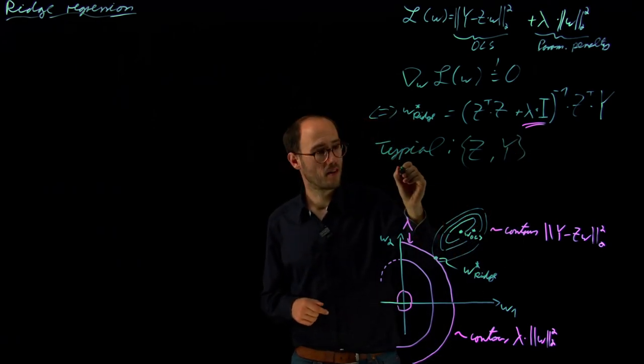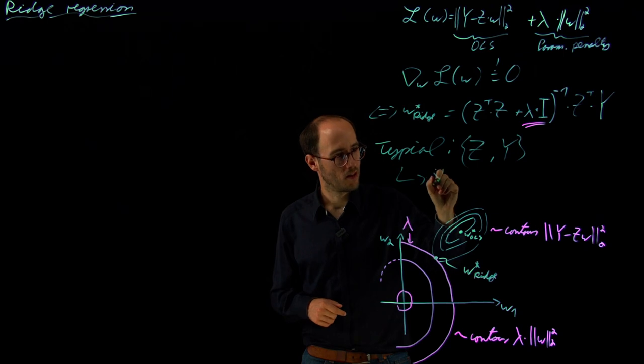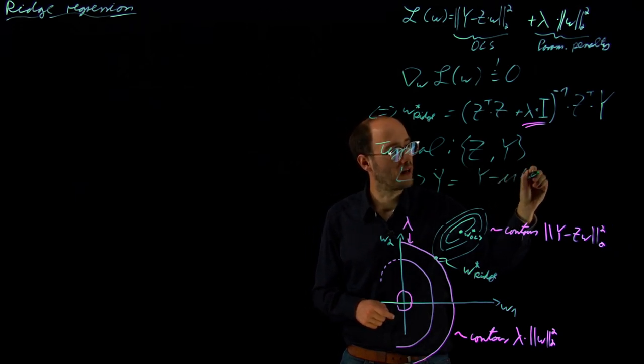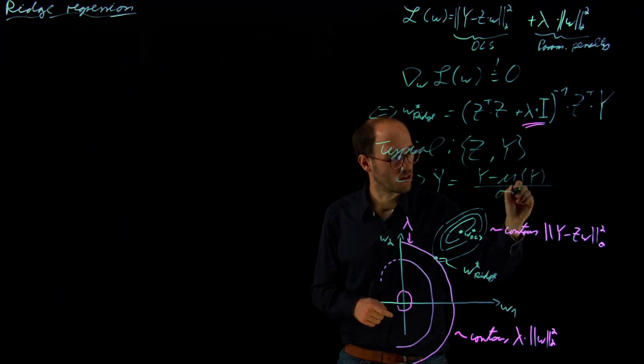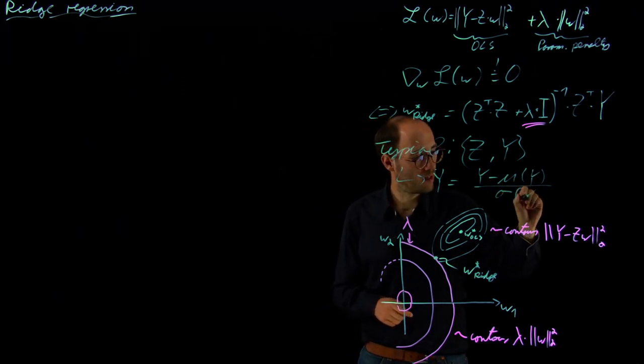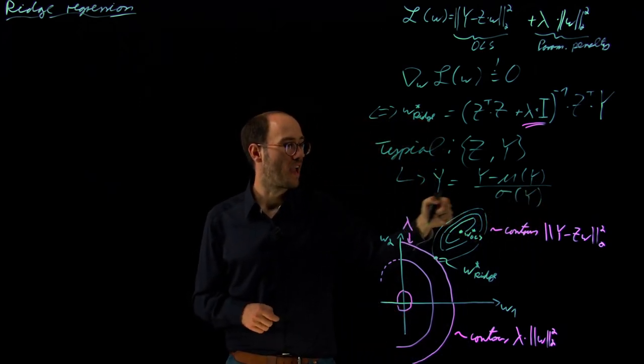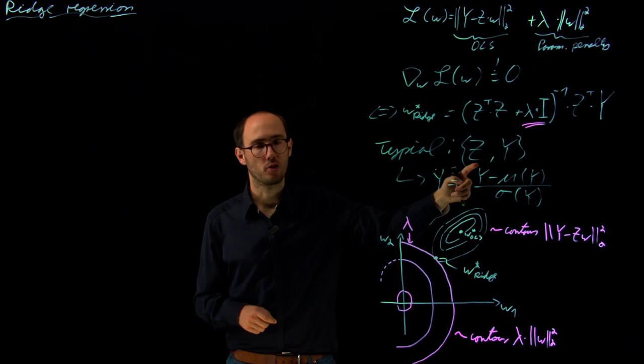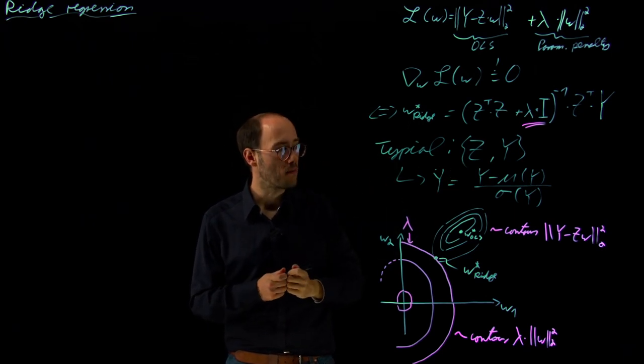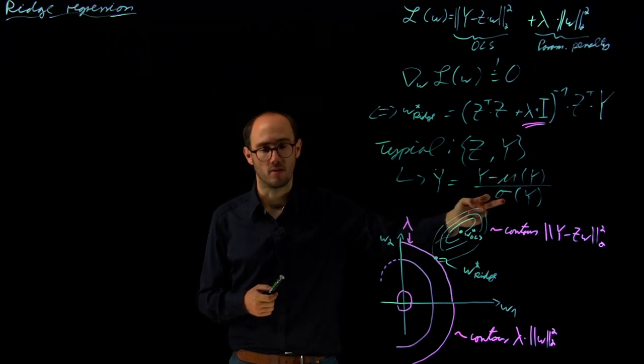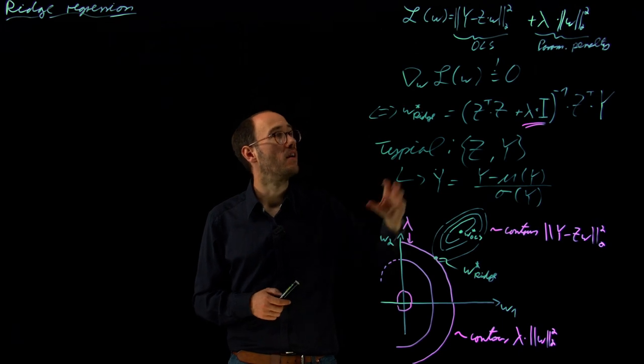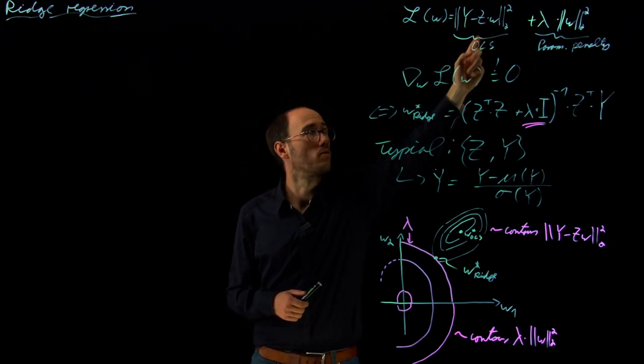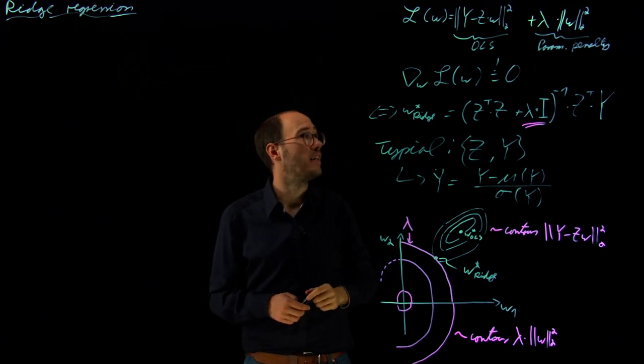What we normally do is we typically standardize our regression matrix Z and our output Y. That means, at the example of Y, we would calculate (Y - mean(Y)) / std(Y), such that Y is bias-free and in a suitable value range. The same could be done for the different regressors, per regressor independently, because every regressor would have its own mean and standard deviation. By doing this we would get a more homogeneous value range in Y and Z, and therefore the meaning of w, which is penalized, becomes more comparable.